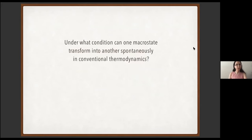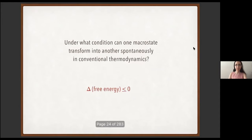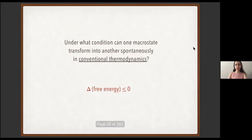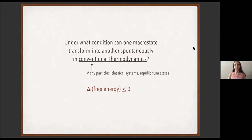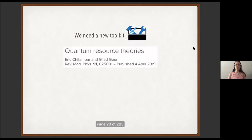Taking a cue from Adam and Lenny, let's think about thermodynamics. We often ask: under what conditions can one macrostate transform into another spontaneously? We answer by identifying the relevant free energy — if and only if it declines monotonically, the transformation can happen spontaneously. But thermodynamics involves restrictions to many-particle classical systems and equilibrium states. If we're quantum information theorists, we might not want all these restrictions. The resource theory framework offers a new toolkit, and I highly recommend this review by Eric and Gilad.